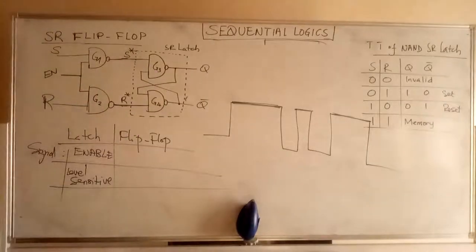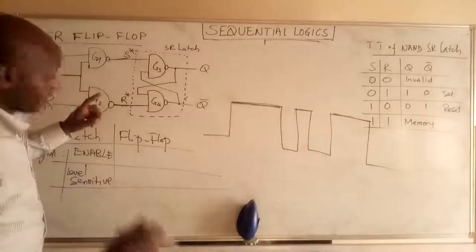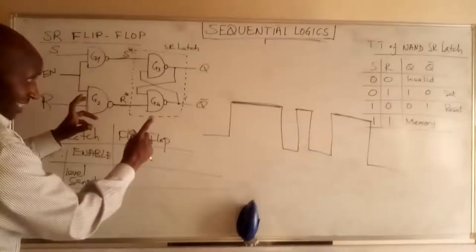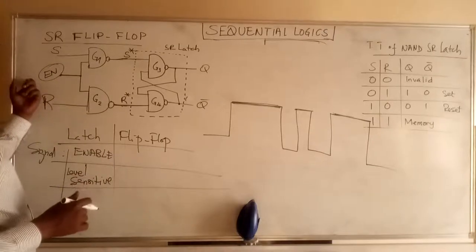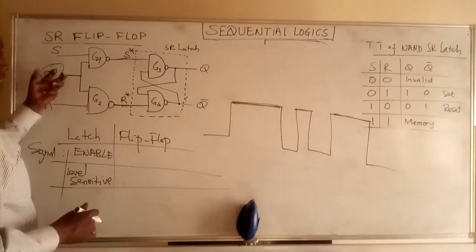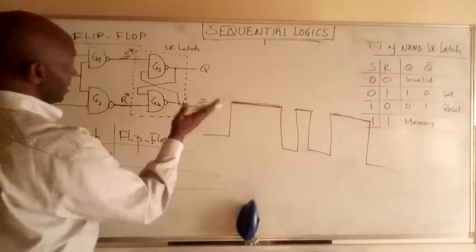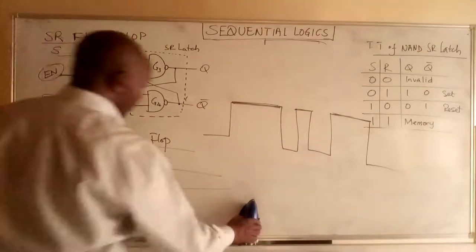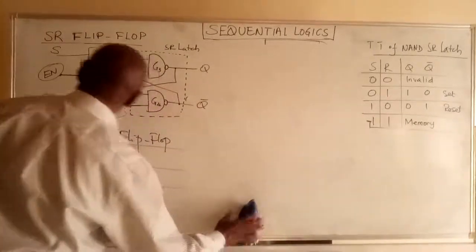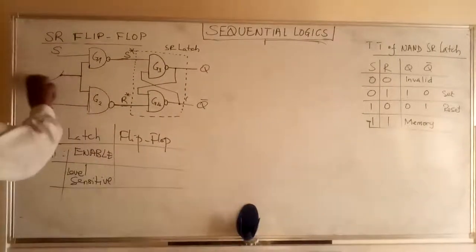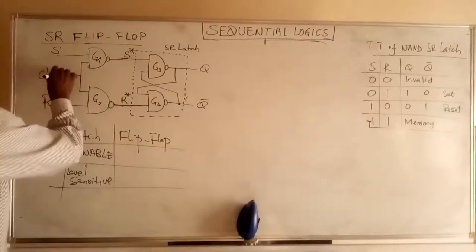That is different from the flip-flop. When it is a latch, this control signal is used as an enable — you enable the signal to 1 and the circuit functions, which is why it is level sensitive. But for a flip-flop, this enable signal will be used as a clock.